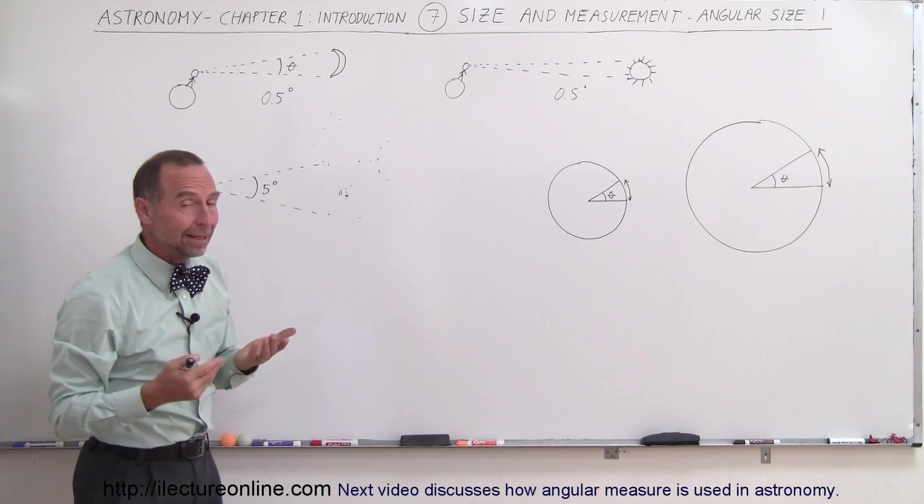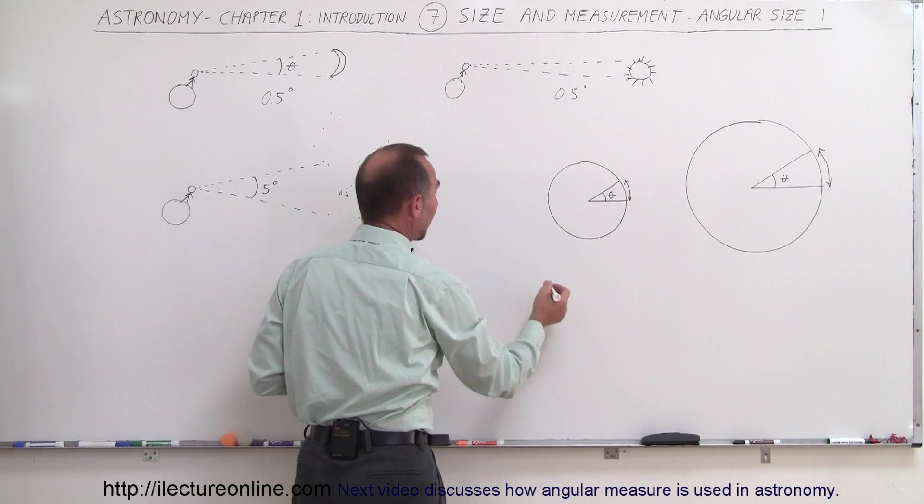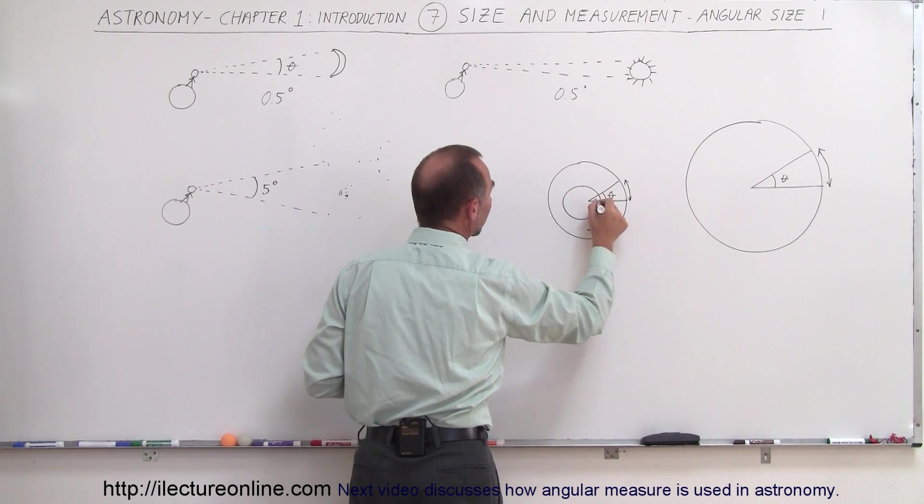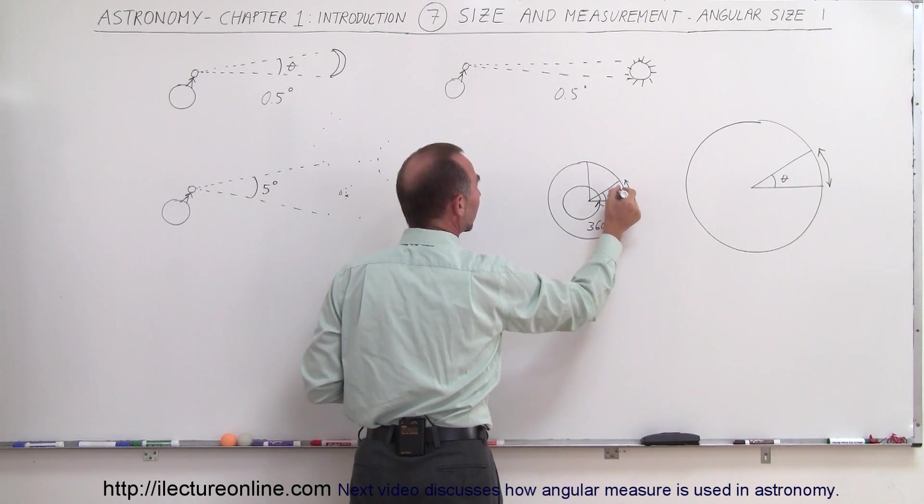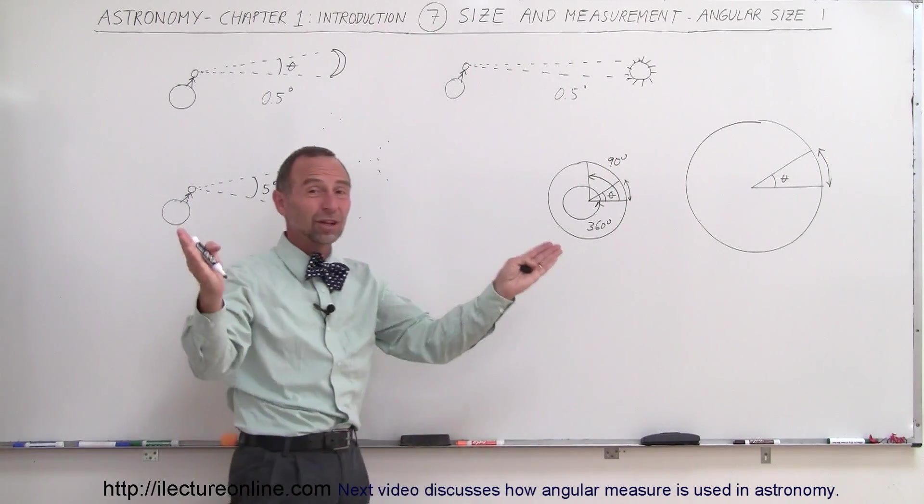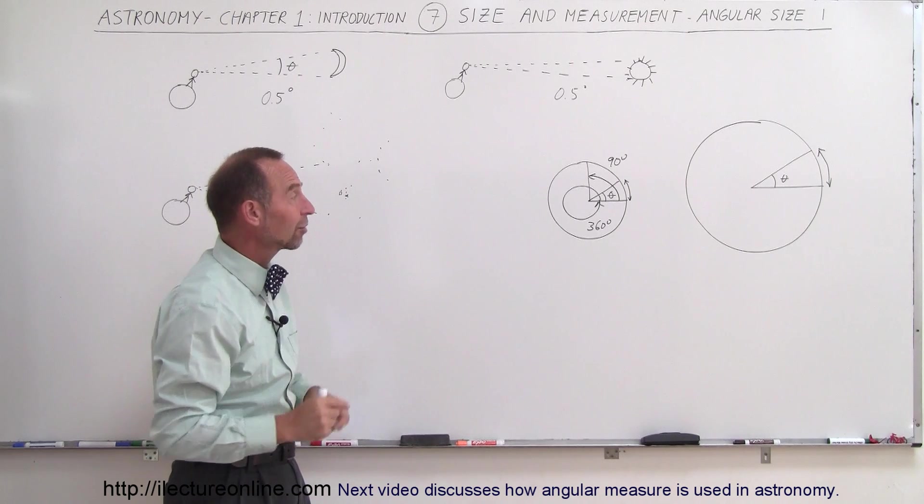In astronomy, it's easy to measure angle. The way we measure angles is, we can say that if you go all the way around the circle, that would be a 360-degree angle. If you go a quarter circle, that's a 90-degree angle. Typically in astronomy, we're looking at things that are much smaller than 90 degrees, a few degrees or a fraction of a degree.